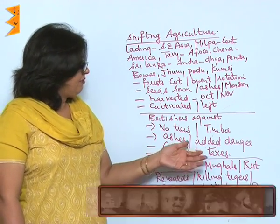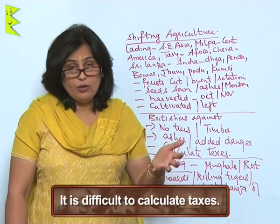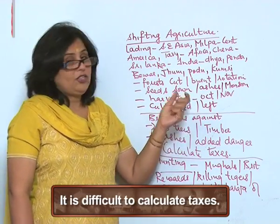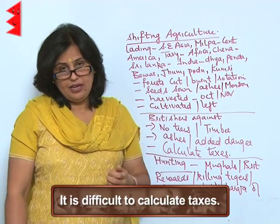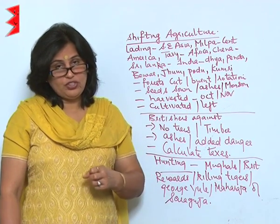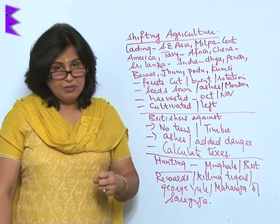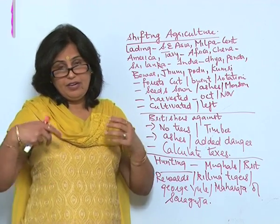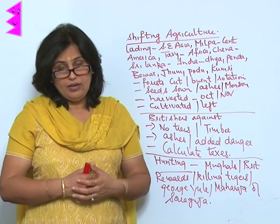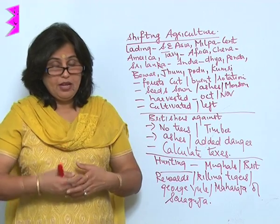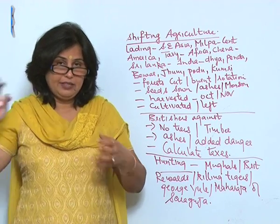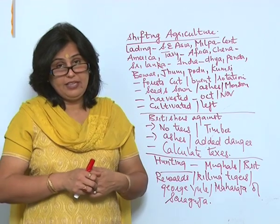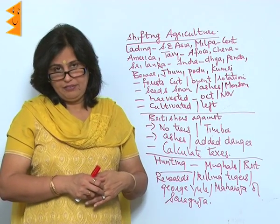Another reason the British opposed shifting agriculture was that it was very difficult to calculate taxes on it. The revenue generated was not specific or certain because people would cultivate and then move on, making it hard to determine from whom to collect land revenue.